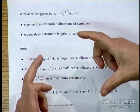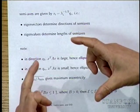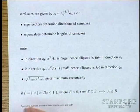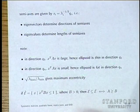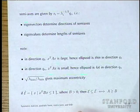In R^3, an ellipsoid that looks like a pancake has two long semi-axes and one short one, corresponding to one large eigenvalue and two smaller ones. A cigar shape has two small semi-axes and one long one, corresponding to two large eigenvalues and one small one. Ellipsoids come up as confidence sets in statistical estimation.